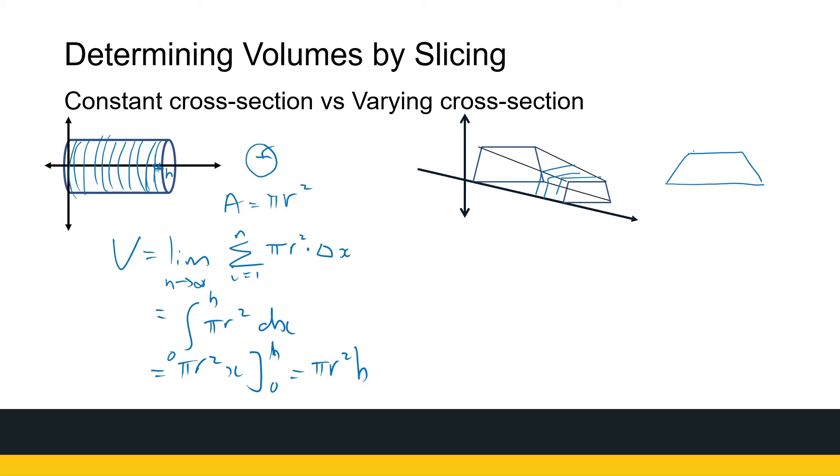But now if we look at the other shapes, we've got a varying cross-section. If I look at the area of one slice, that depends on where I am, what my x value is. So the volume for this one is going to be limit as n tends to infinity, the same process of the sum, where i goes from 1 to n.